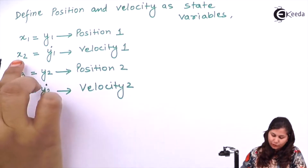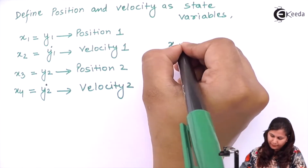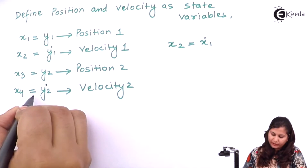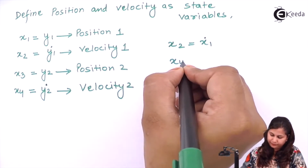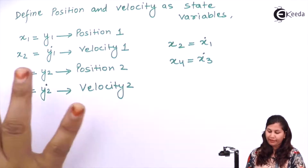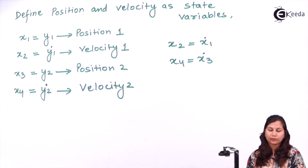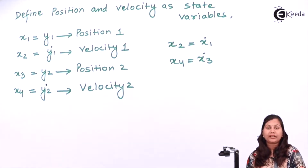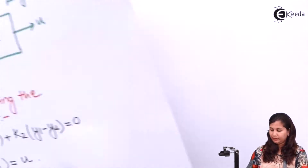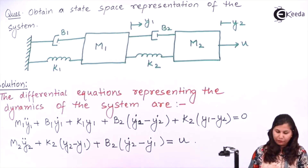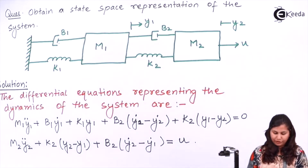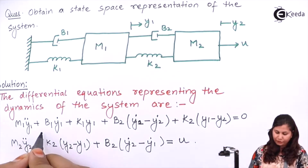Notice that x2 is x1 dot and x4 is x3 dot. So we have defined our state variables. Now we have to obtain the state space representation or the state equations, which are the derivatives of the state variables. From the two differential equations we will obtain x2 dot and x4 dot by substituting all variables.